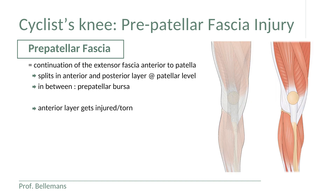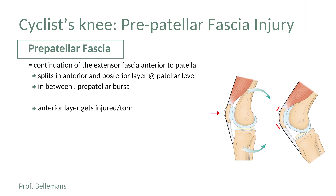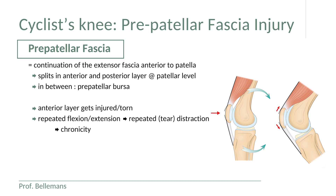On this picture, you can see what happens. The anterior layer gets torn. Each time the knee flexes and extends, the edges of the tear separate and come back together, so that the tear cannot heal and becomes a chronic defect. Repeated flexion-extension leads to repeated tear distraction and chronicity.